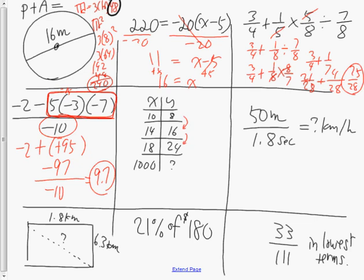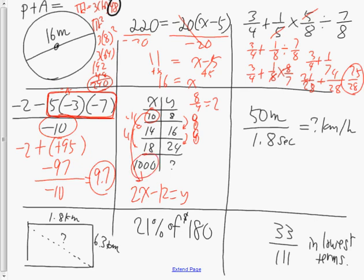The next question asks me to find the missing number in a pattern. The sequence goes up by 8 in y and up by 4 in x, so 8 divided by 4 gives a coefficient of 2, meaning the equation is 2x minus 12 equals y. To find the y-value when x equals 1000, I substitute: 2 times 1000 minus 12 equals 1988.